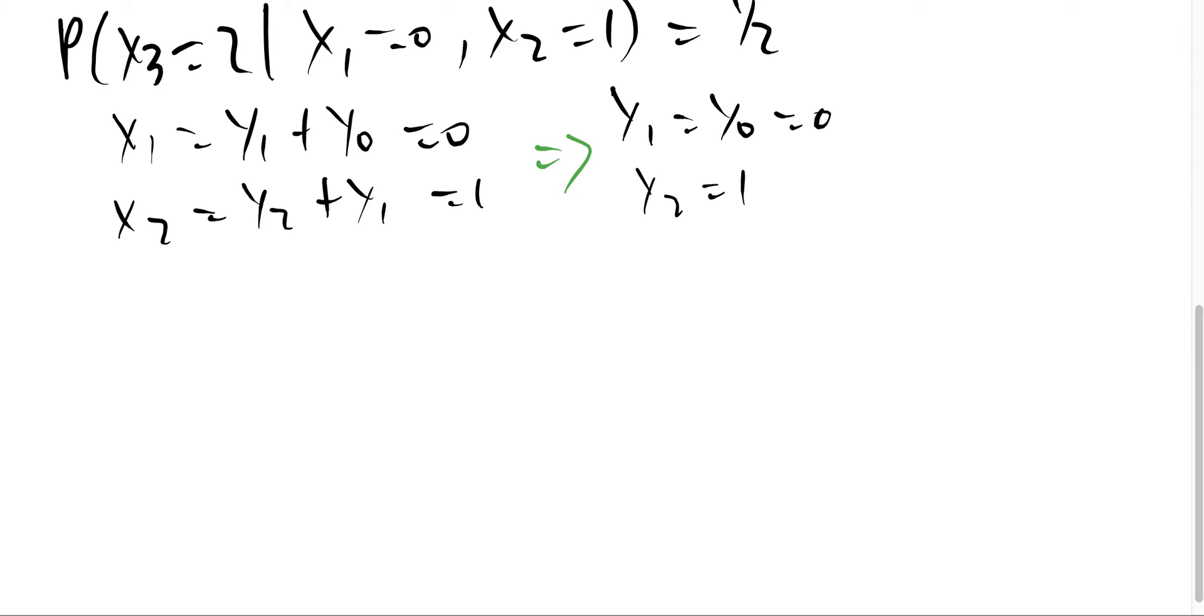Just like above, x3 = y3 + y2 = 2. We know y2 = 1, so y3 = 1 with probability 1/2.